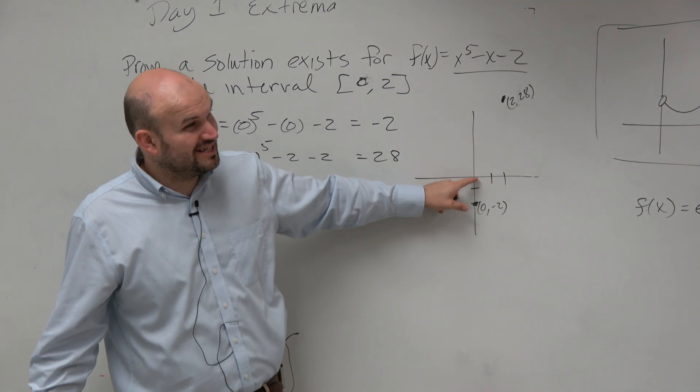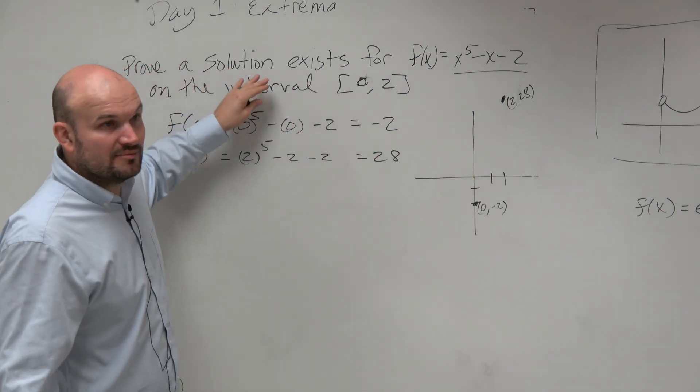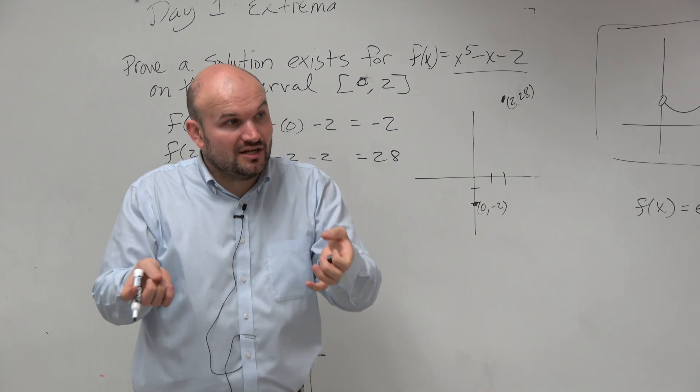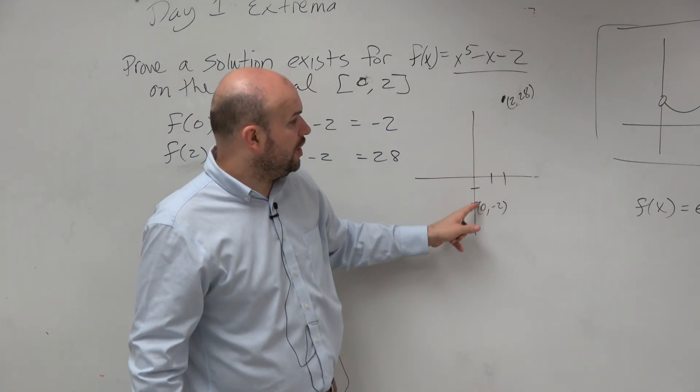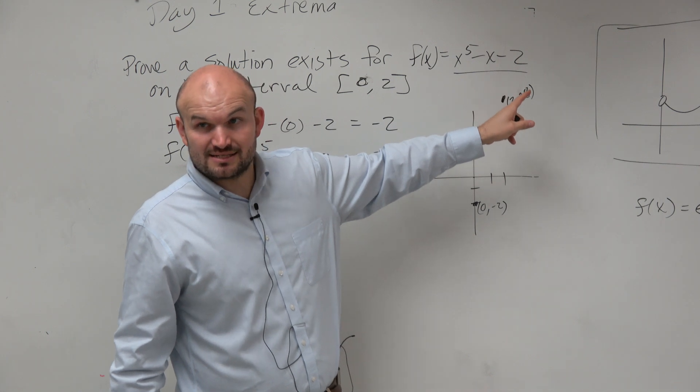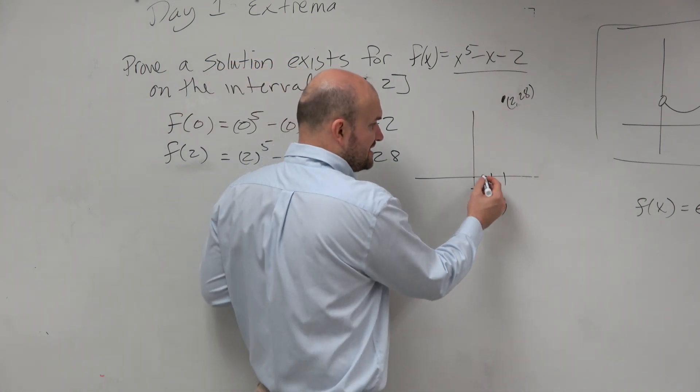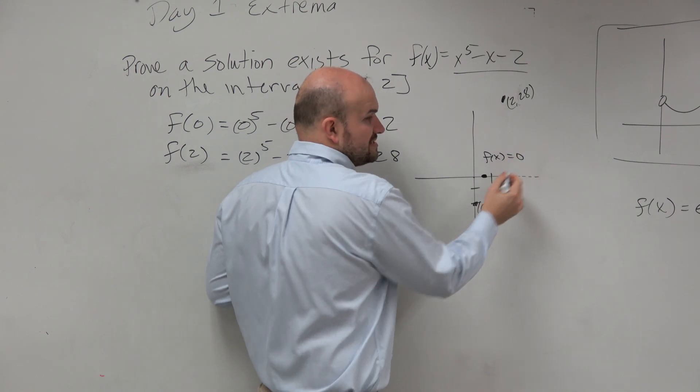Well, we could use technology to find out, but that's not what it's asking. It's just saying prove something exists. So again, the IVT tells us that between two values on a closed interval, a continuous function, all the values in between exist. So there is some value that exists where f of x is equal to 0.